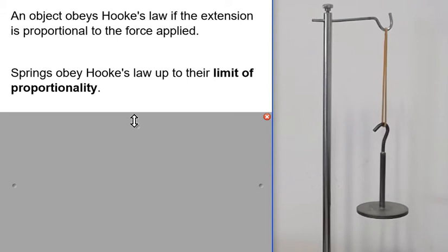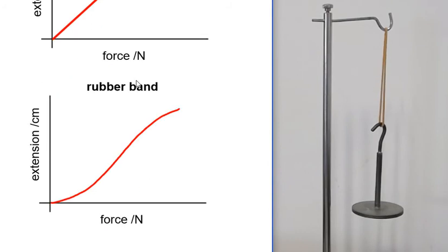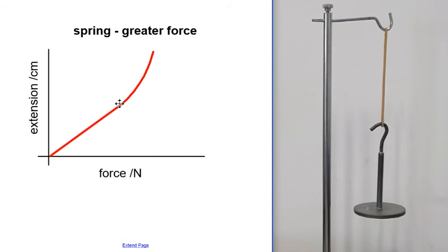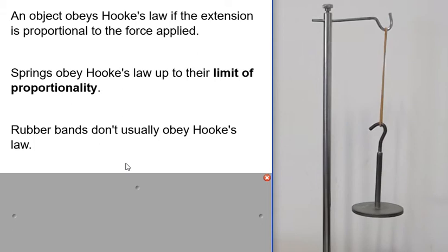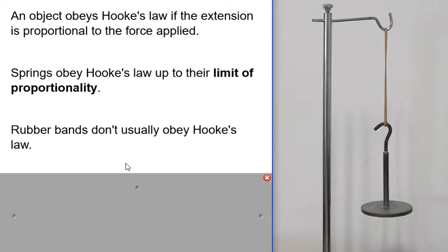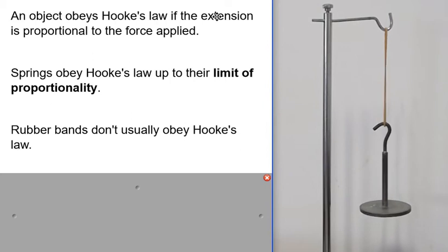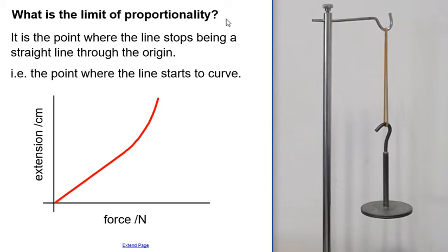Springs obey Hook's Law up to a point — up to their limit of proportionality. The first spring obeyed Hook's Law the whole time and we never reached the limit of proportionality. The second spring obeyed Hook's Law up to a point because extension was proportional to force up to a point, but then the line started to curve. Rubber bands usually don't obey Hook's Law at all because the line is never a straight line through the origin.